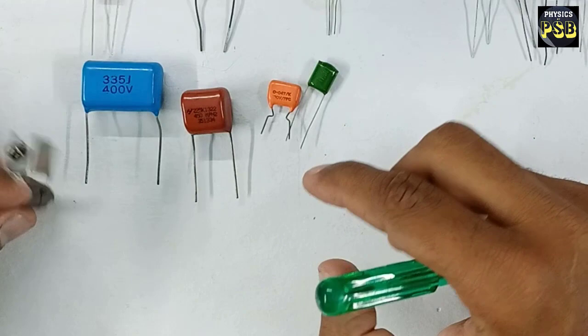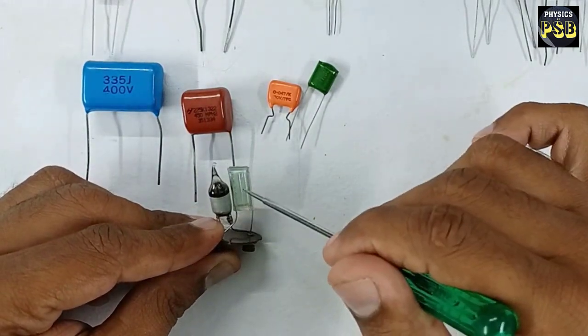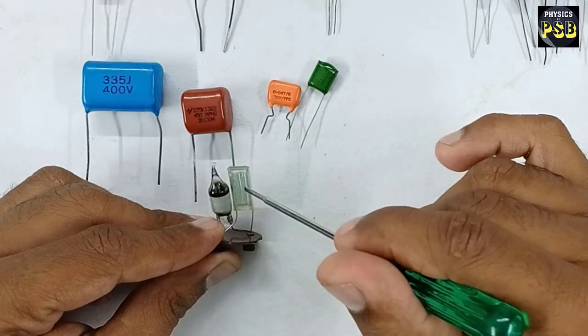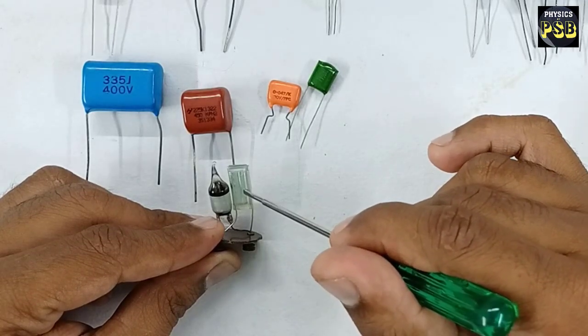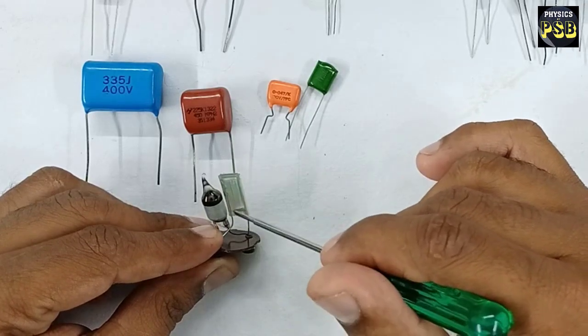You might have seen this kind of capacitor. It is called an aluminium foil capacitor. It is used in tubelight starters.